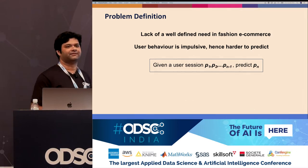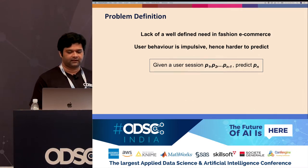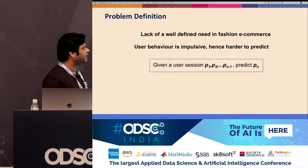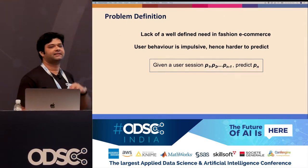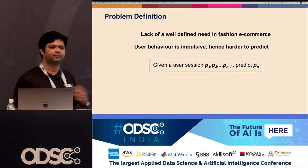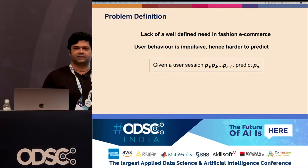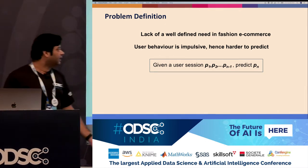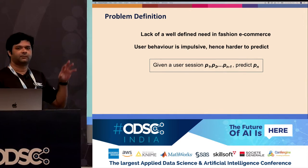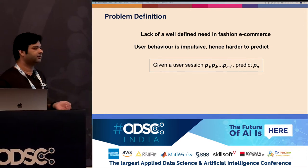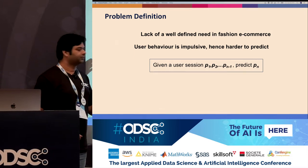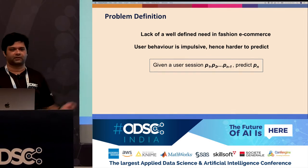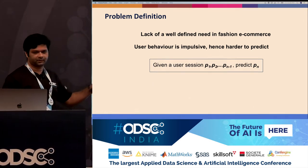Coming to the problem definition: we've established there's a lack of well-defined need in fashion e-commerce — user behavior is impulsive, and hence harder to predict. Recommendation means predicting what the person may like in the near future. So given a user session p1 to pn-1, where p is an individual product, we essentially want to predict the next product the user might want to look at.